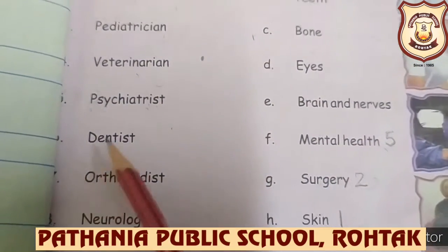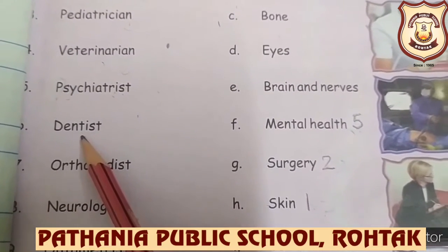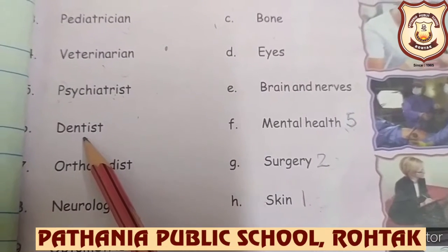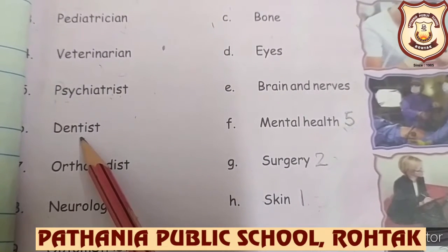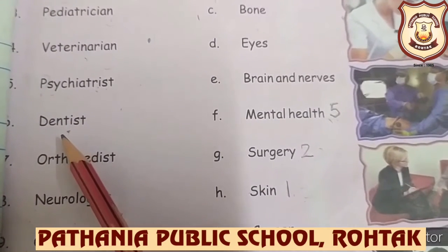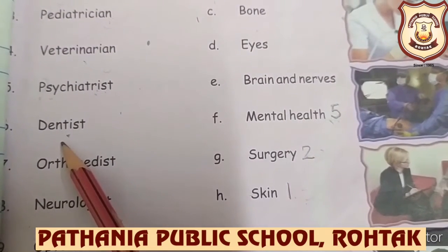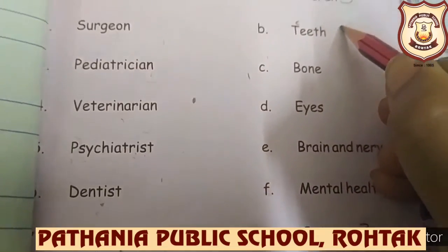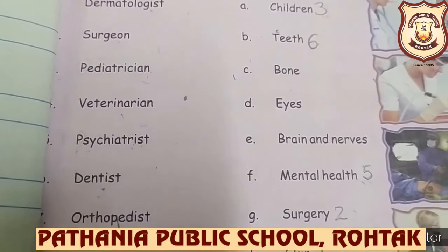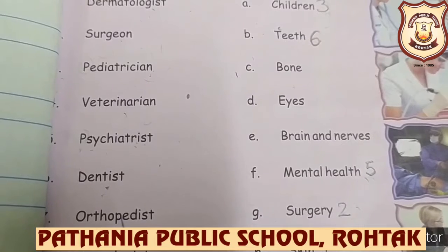Number six: Dentist. A dentist treats and prevents all problems related to teeth, gums, oral cavity, and other health problems affecting the mouth. So you have to match dentist — number six — with 'teeth.'